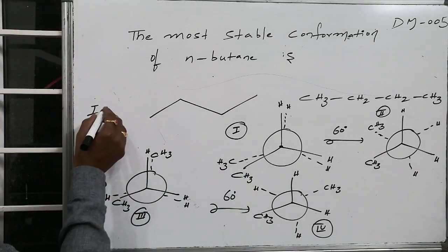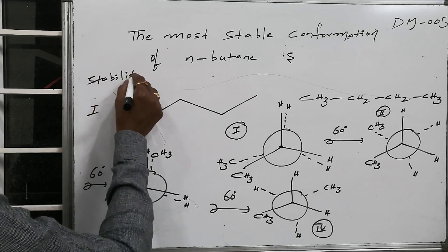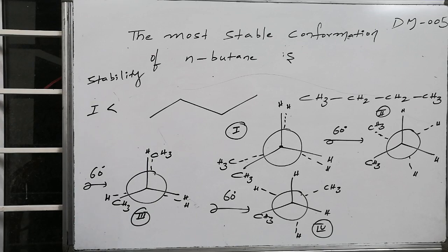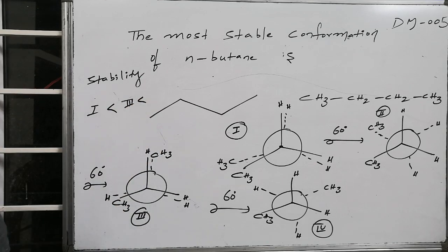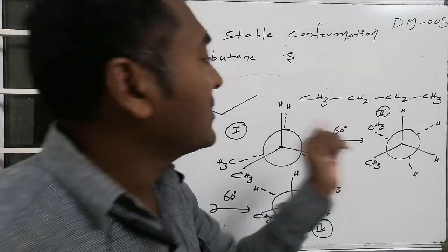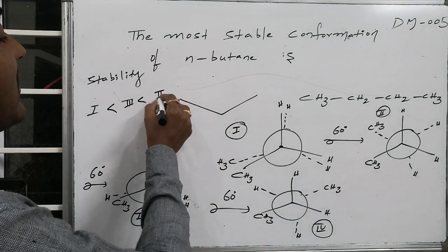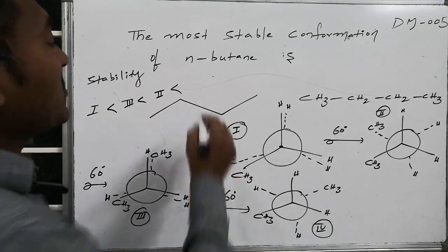1 is having least stability, I am talking regarding stability. Least stability is present for the first system. First system followed by third also, that is also eclipsed part. Compare it to first, third is having somewhat better stability. Compare it to third, the next one is second one. Second one is having somewhat good stability. Compare it to second, fourth one,